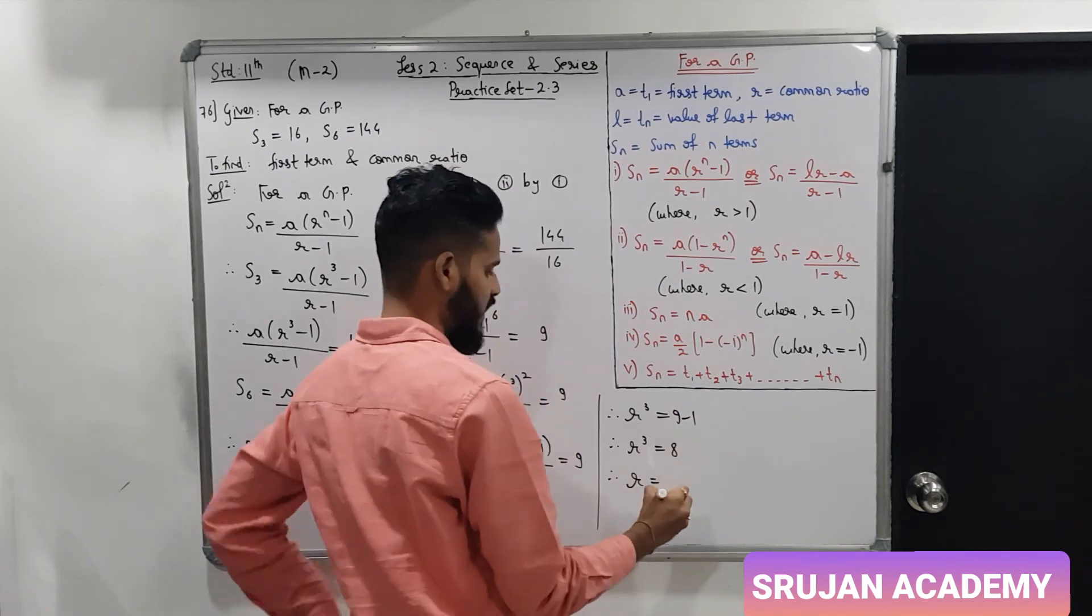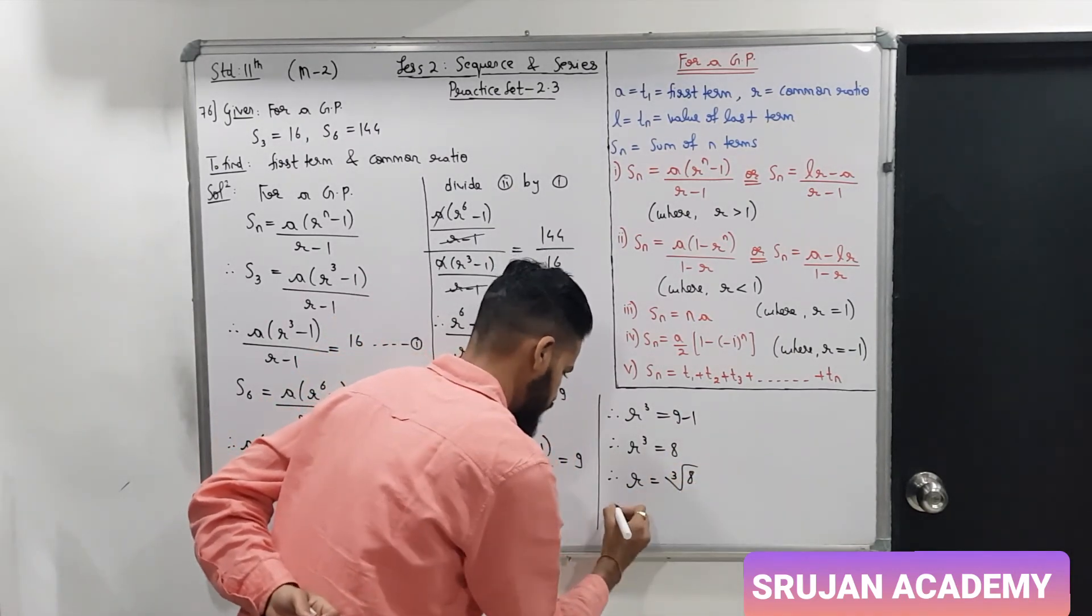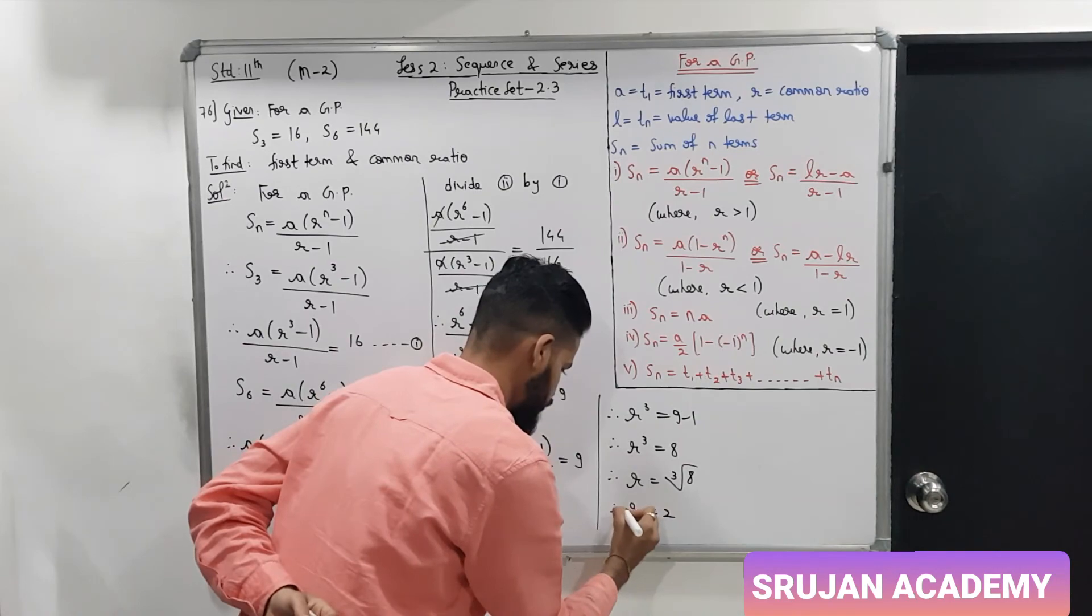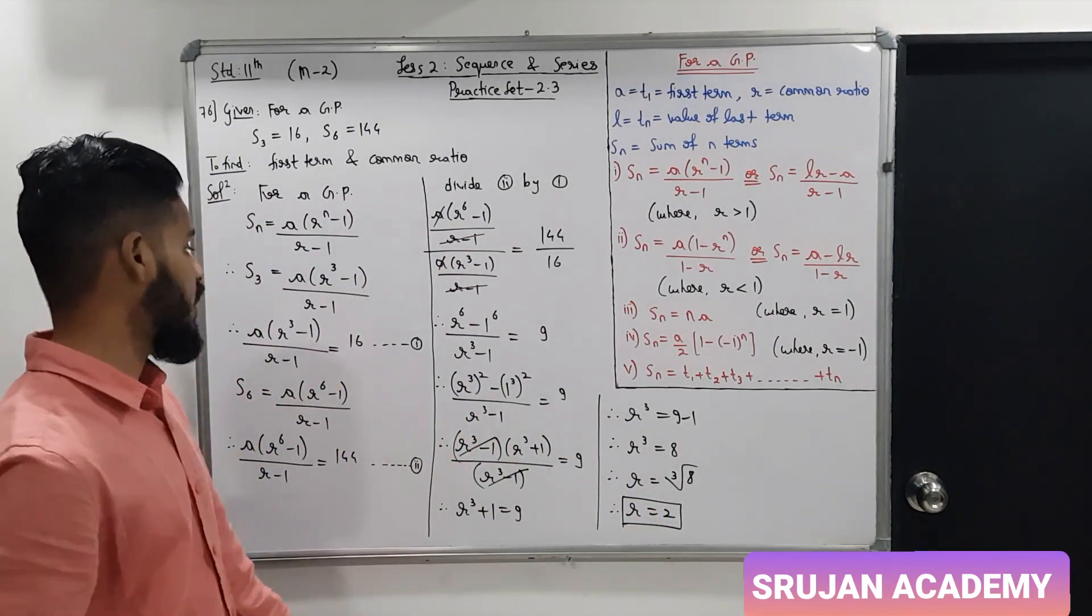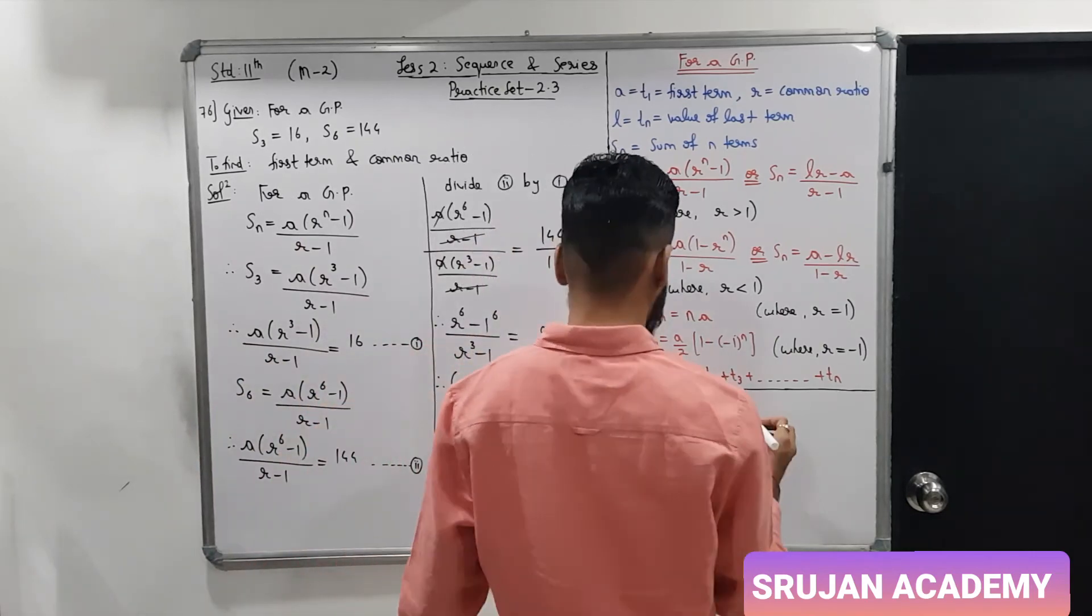And this plus 1 left side to right, so minus 1. So R cube is 8. Taking cube root, R is 2, which is common ratio, that is 2.